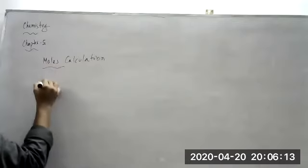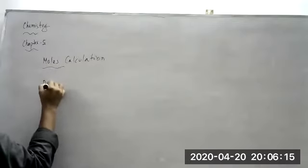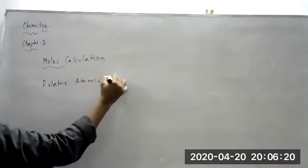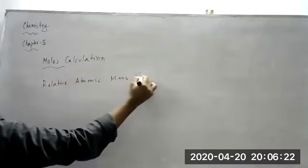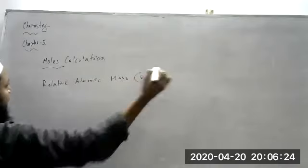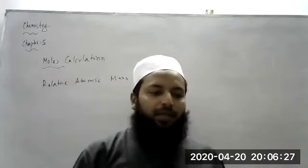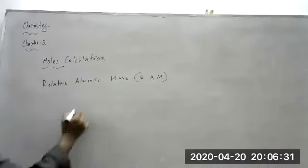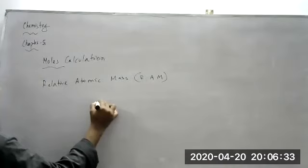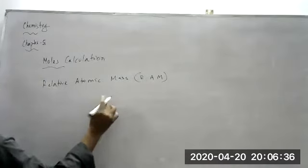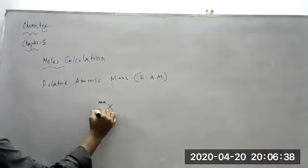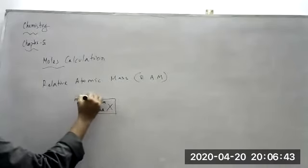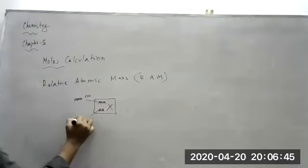First you need to understand relative atomic mass. Relative atomic mass — we call that RAM. In a periodic table there are many elements, and every element has a mass number, which is the number at the top of that element, and we have an atomic number. So this is the mass number, and this is the atomic number.